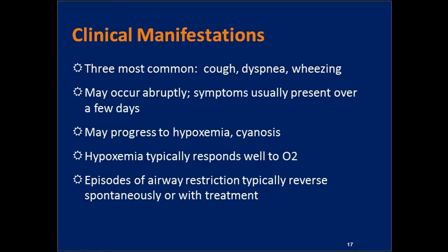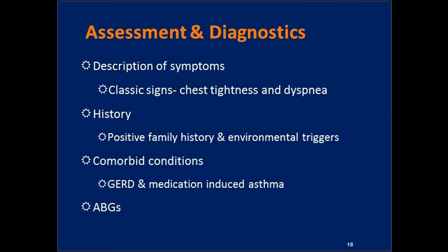Dyspnea and bronchoconstriction can progress to hypoxemia and then eventual hypoxia with cyanosis. Typically the hypoxemia responds well to oxygen — put the patient on a nasal cannula or simple mask and their O2 sats come up quickly. If we can get a bronchodilator on board, we can really reverse that airway constriction. Assessment findings include the patient's description of symptoms — they'll feel tight, say their chest is tight or they're not getting air, and tell you they need a treatment. Assess for positive family history of asthma, as it is familial.